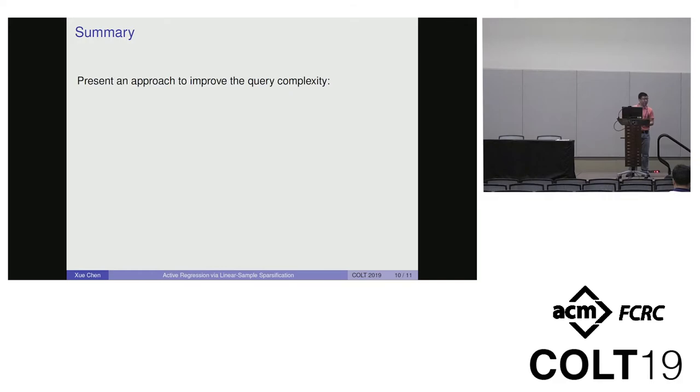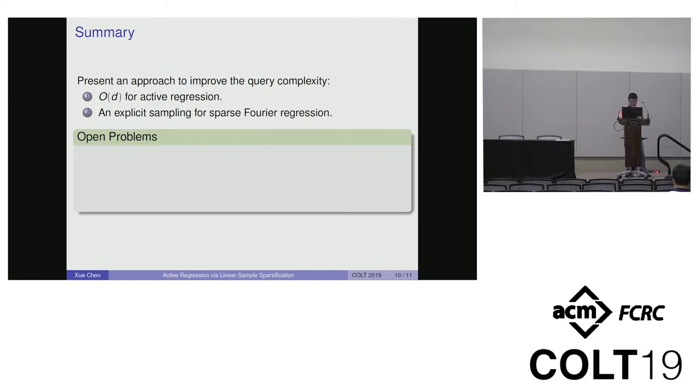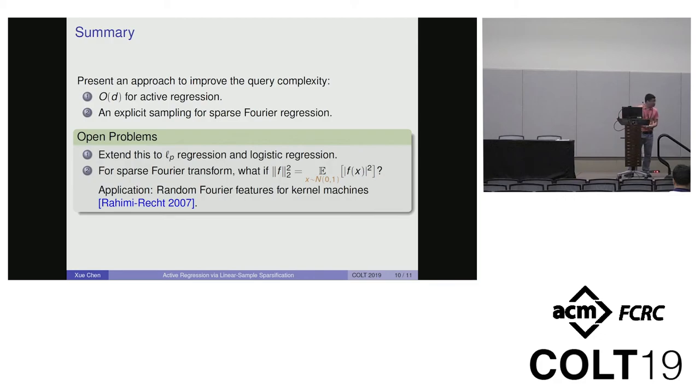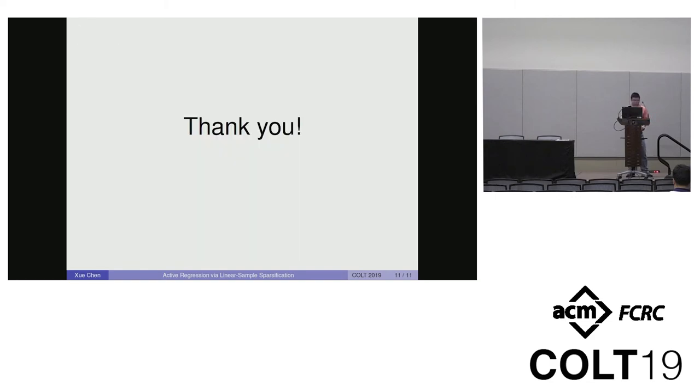Let me summarize. We present a general approach to improve query complexity. We give an O(D) query learning algorithm for active regression and present an explicit sampling distribution for sparse Fourier transform. Two open problems: First, can we extend this to L^p regression and logistic regression? Second, for sparse Fourier transform, what if we replace the distribution underlying the L2 norm with standard normal Gaussian? This is related to random Fourier features for kernel machines. Thank you, that's all I want to say.